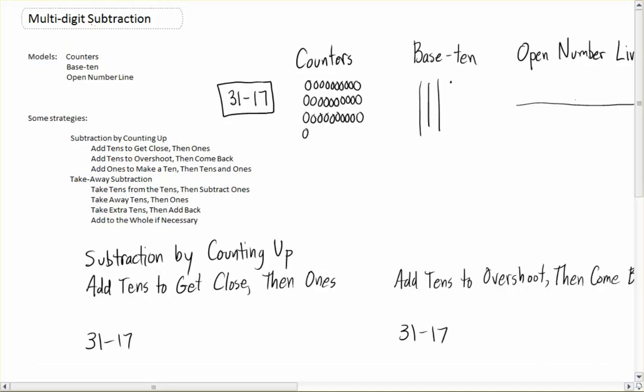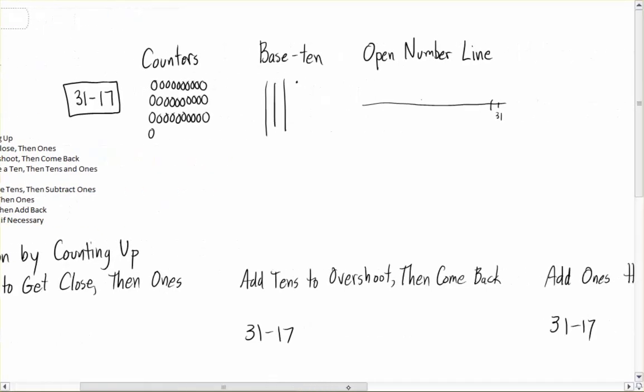Models are the same as we saw for addition: counters, base 10 models, and the open number line. The action is a little bit different. Let's take a quick look.